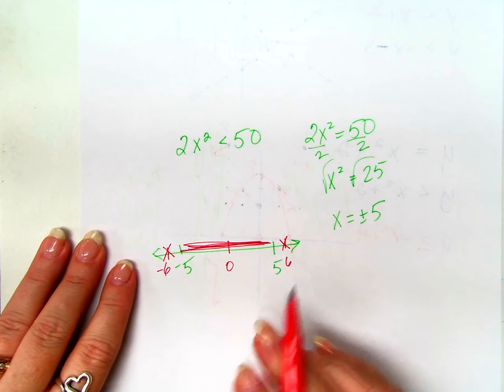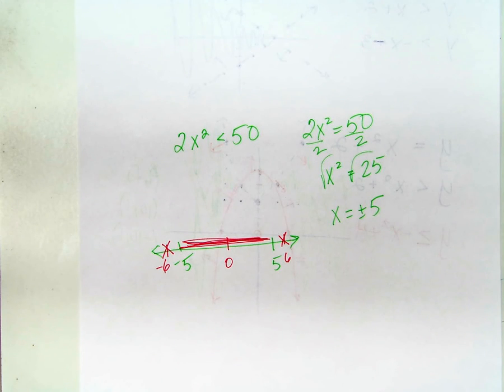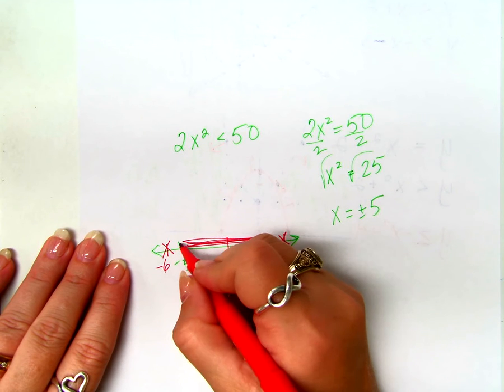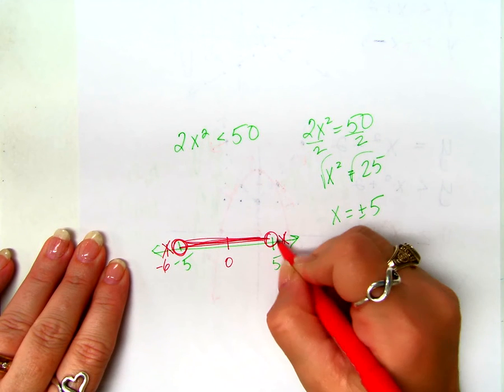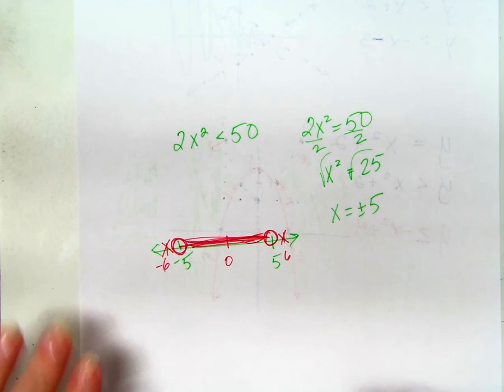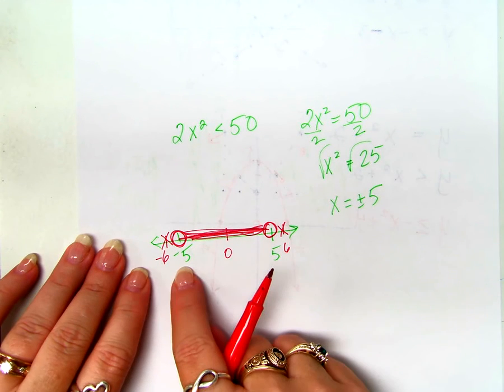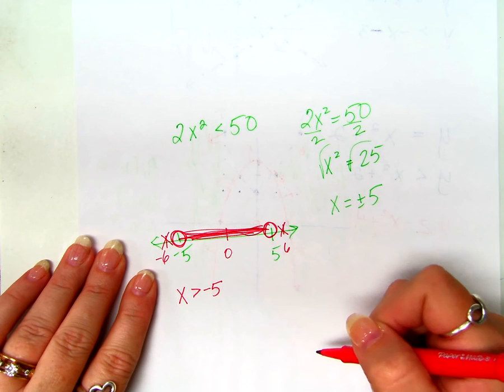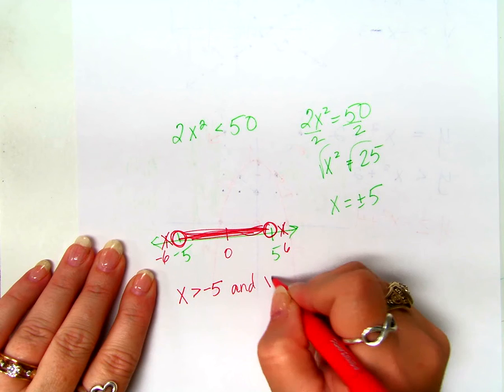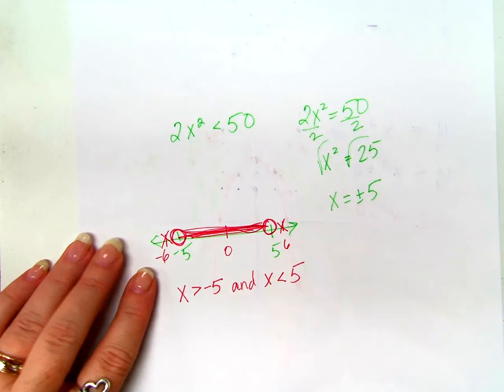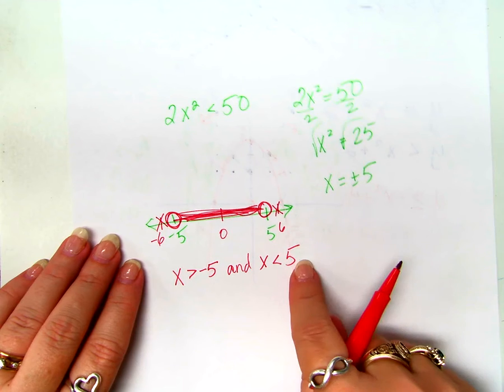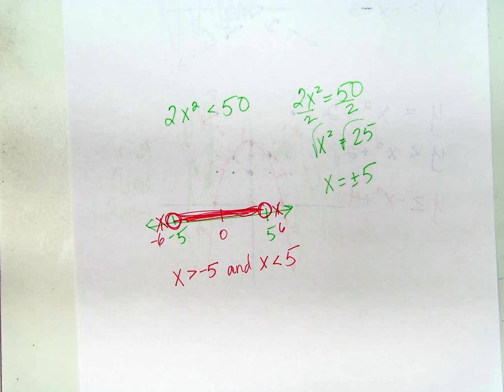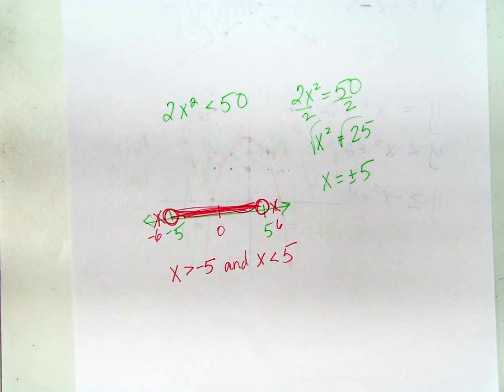But now we have to talk about the 5 and negative 5. Are they part of the solution? No, because it's not equal. Because it's not equal to. So what goes here? Open circle. Open circle. But where I shade is in between the two of them. What's a way to write this? Algebraically, what's a way to write this? X is greater than negative 5 and X is less than 5. Either one of these are acceptable answers. Negative 5 is less than X is less than 5. Any questions?